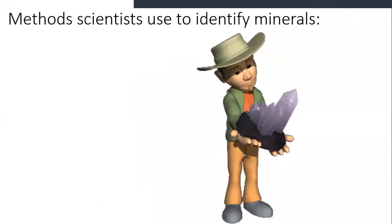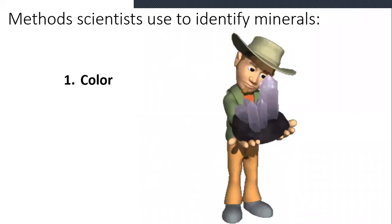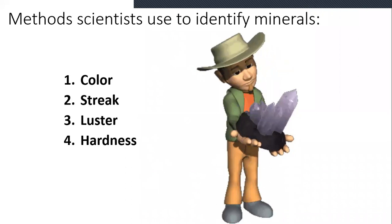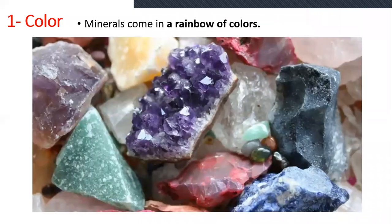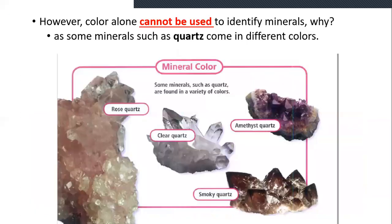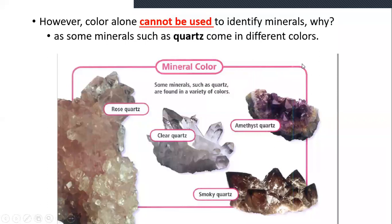We learned that there are ways to identify minerals. We started with color, streak, luster, and hardness. We said color is the first way, but it's not accurate because minerals come in rainbow colors. For example, here we have quartz — it's the same mineral but it comes in different colors. So again, color is not an accurate way to identify minerals, or we cannot use it alone.